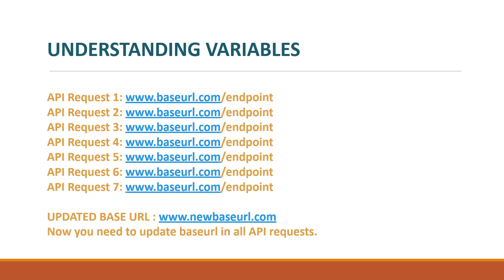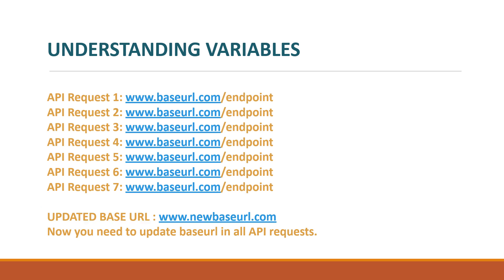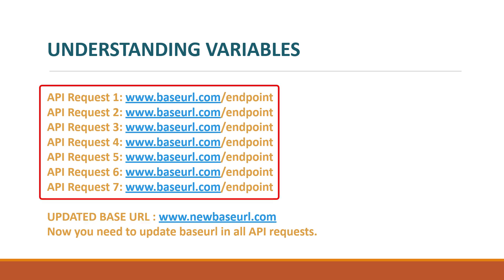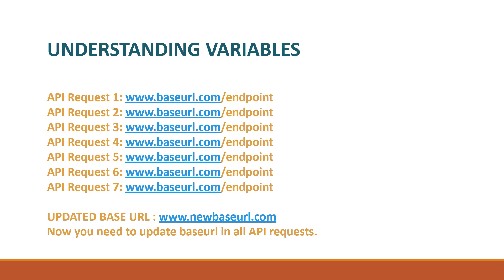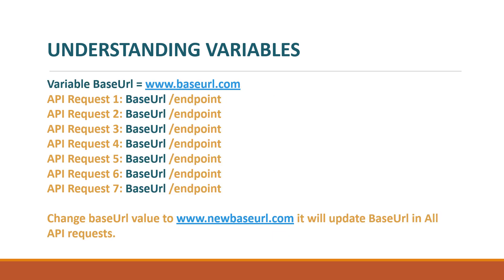Let's learn about variables with a real-time example. Suppose you are working on a project that has seven APIs and the base URL is www.baseurl.com. Suddenly you get a change request from the client that the new URL would be www.newbaseurl.com. In that case, you would have to go to each and every API request and update the base URL, which would be very tedious.